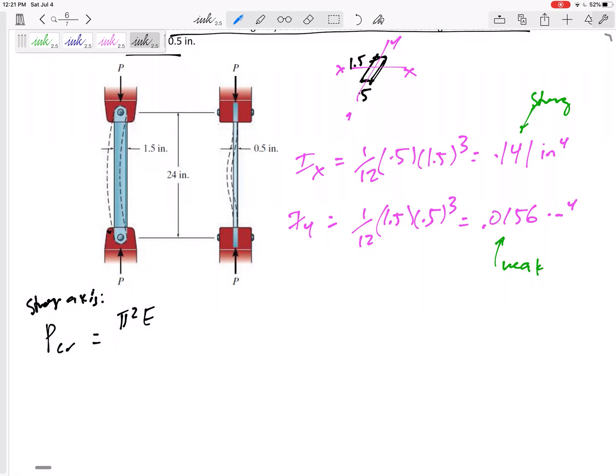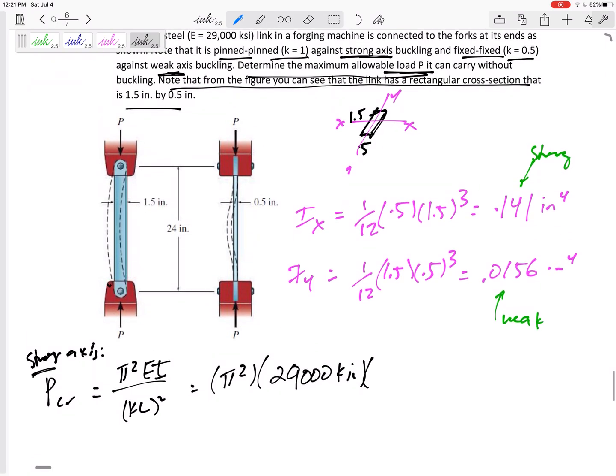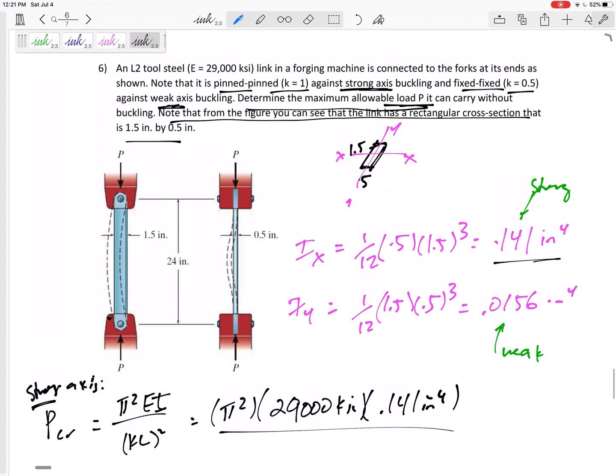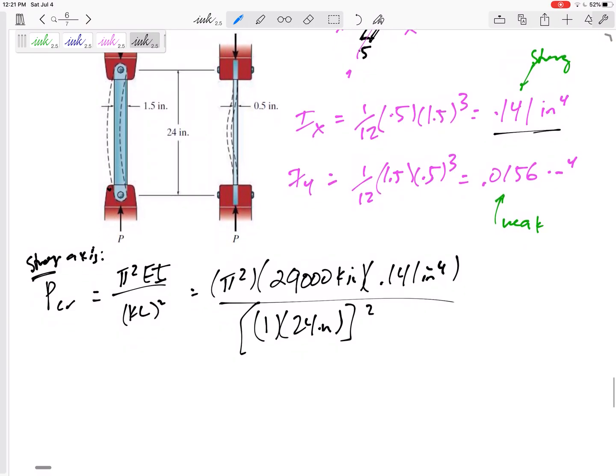P critical, we've got our equation: pi squared EI over KL squared. Pi squared E is 29,000 KSI. The I of the strong axis is 0.141 inches to the 4th. The K for the strong axis, K is 1. Length for either of these would be 24 inches, and square that.